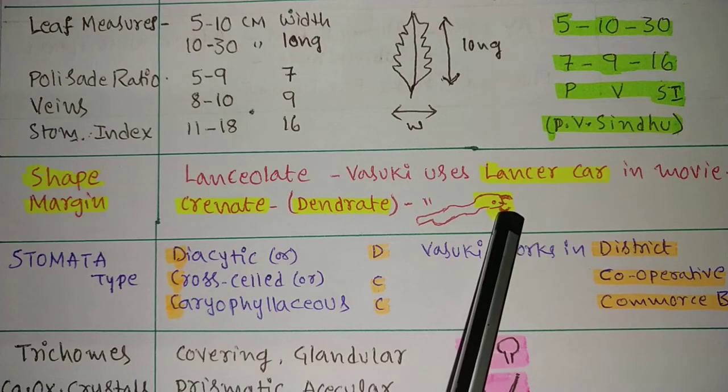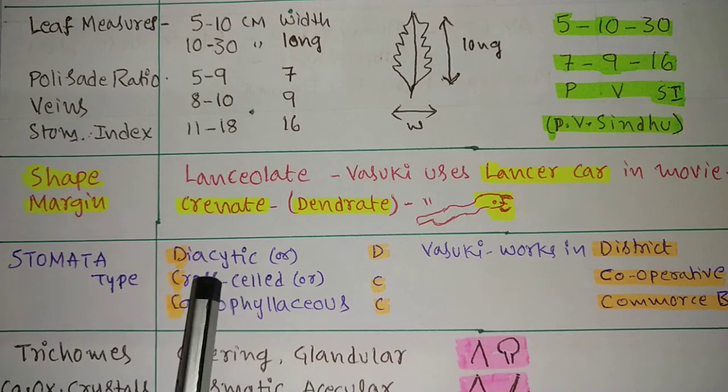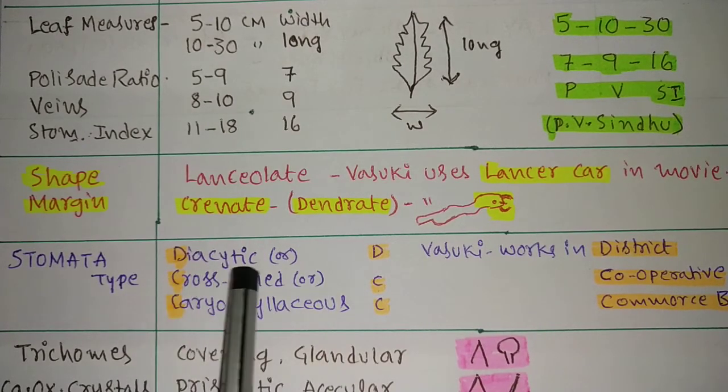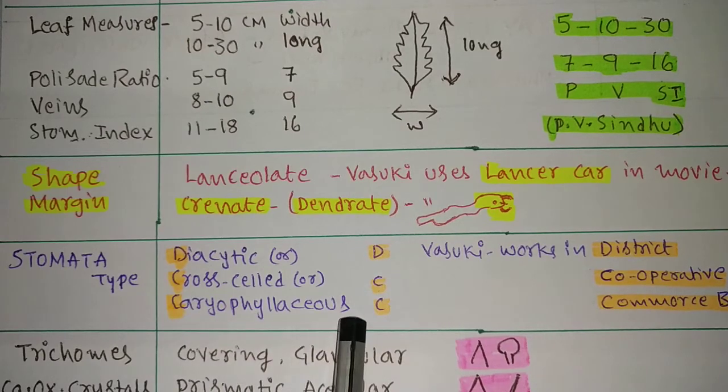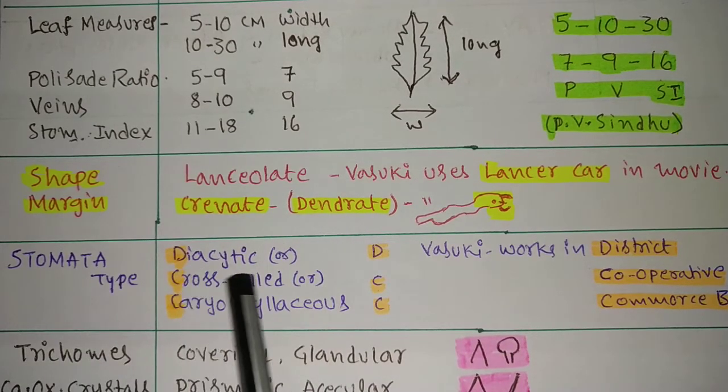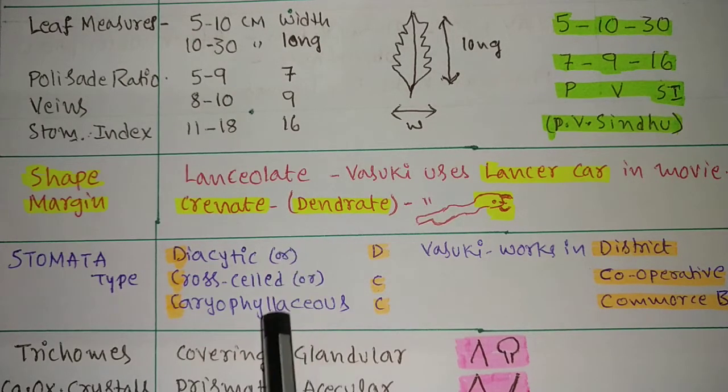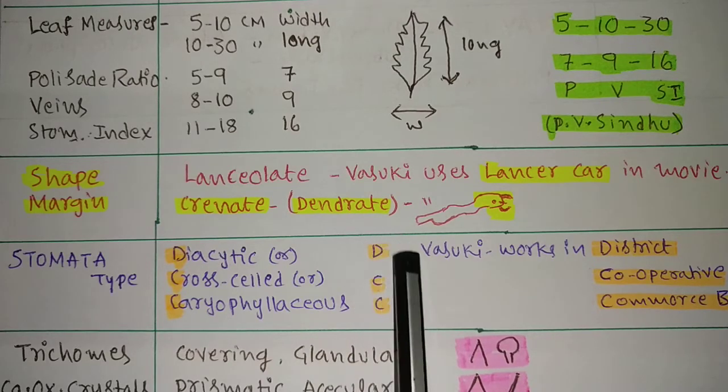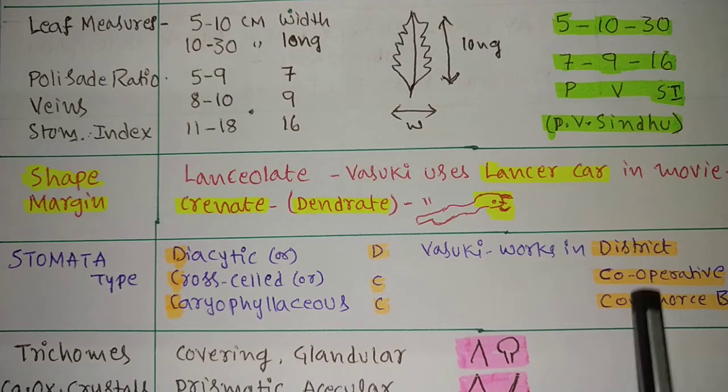Next is stomata type. Stomata type of Vasaka is diacytic. Diacytic stomata - very important, appeared many times in exams. Diacytic is also called as cross-celled, also called as caryophyllaceous. In the exam, don't get confused. All three are same: diacytic, cross-celled, caryophyllaceous - D, C, C. How to remember? Vasuki works in the District Cooperative Commerce Bank, DCC Bank.